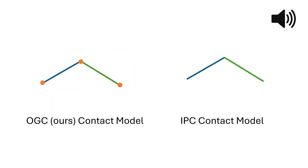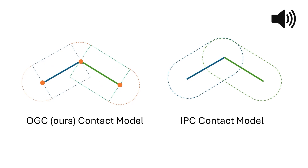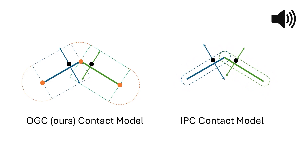Unlike our model, IPC offsets triangles in all directions, forming capsule-like geometries. It generates non-orthogonal forces in overlap regions for both the blue and green triangle. IPC mitigates this issue with a small contact radius, leading to numerical issues and slow convergence.